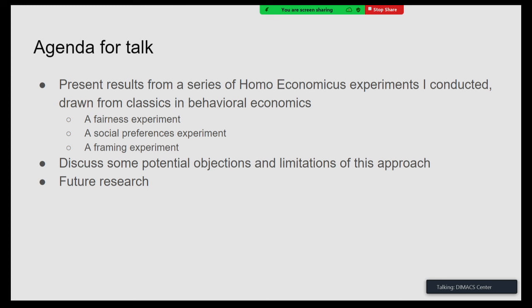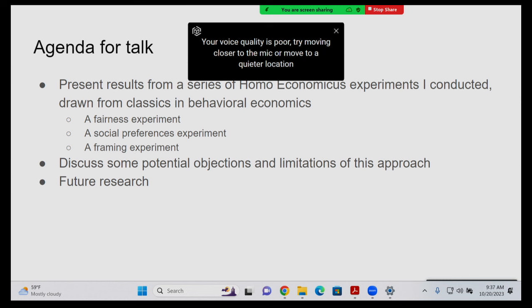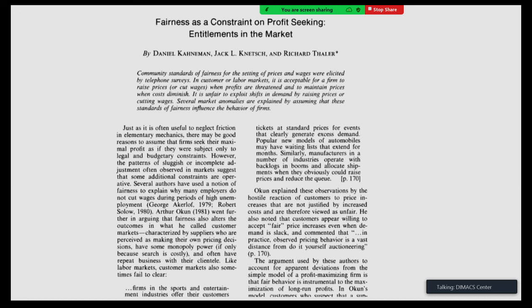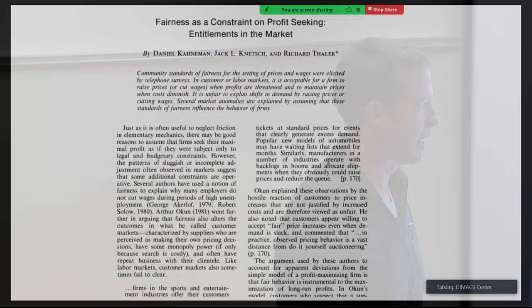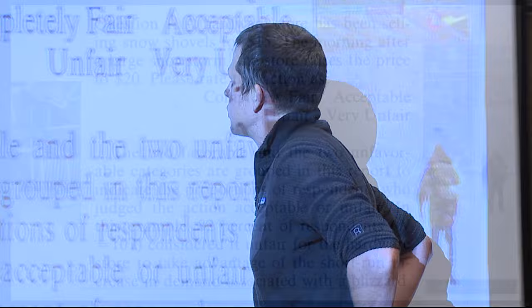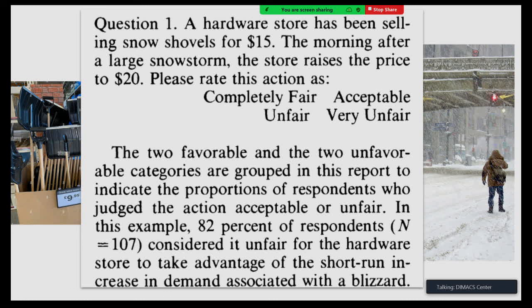I'm going to show three classic experiments from behavioral economics, compare what we know real humans did, then look at what GPT-3 da Vinci did. First is a great paper by Kahneman, Knetsch, and Thaler about when people's beliefs about fairness prevent markets from clearing. They asked undergraduates scenarios, starting with: imagine a hardware store has been selling snow shovels for $15. The morning after a large snowstorm, the store raised the price to $20. Please rate this action as completely fair, acceptable, unfair, or very unfair.